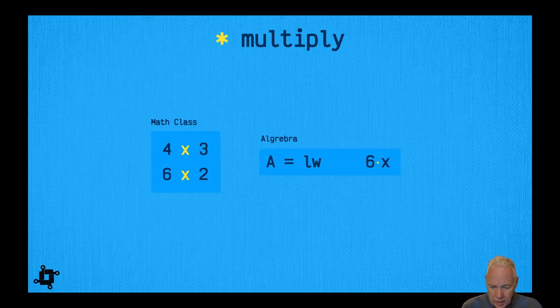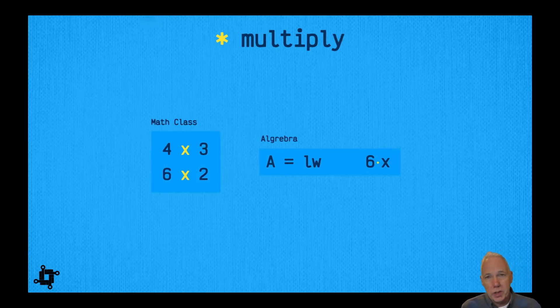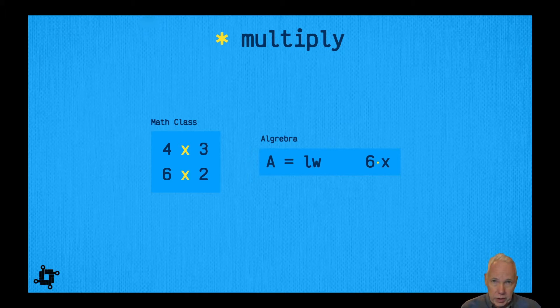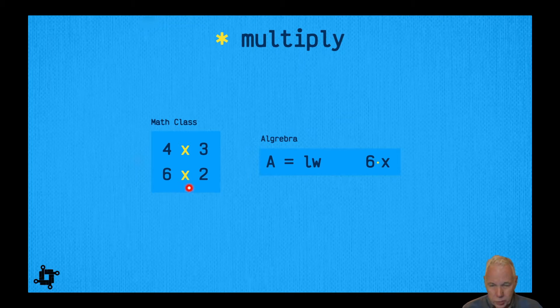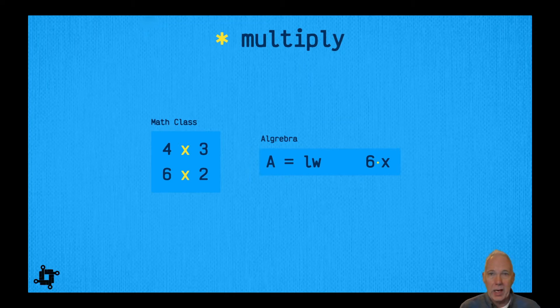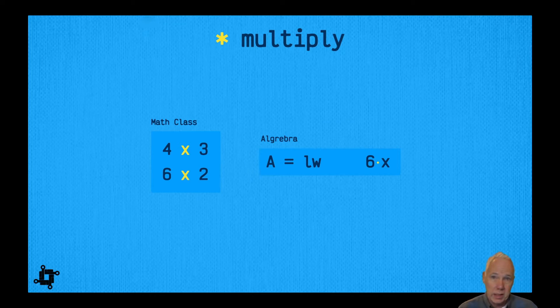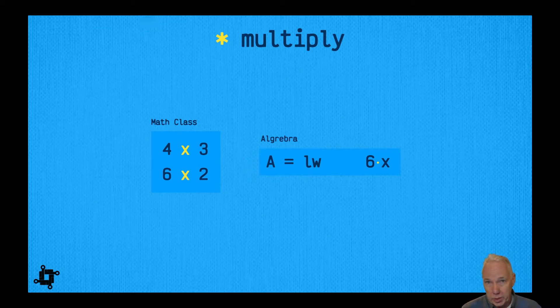The third one is multiply. This one is a little different because in a lot of different classes the use of the multiply operator is different. For example, in math class we see that when we first start out they'll use the x, so 6 times 3 is whatever, and they'll use the x as the multiplier. Then as we get into algebra class they may drop it completely, so like L and W, let's say that's the length and width of a rectangle. By putting them together like this, we're actually implying multiplication.